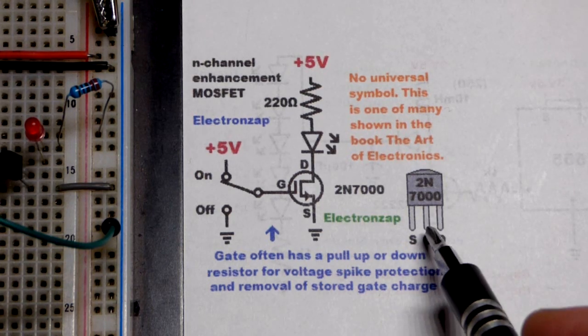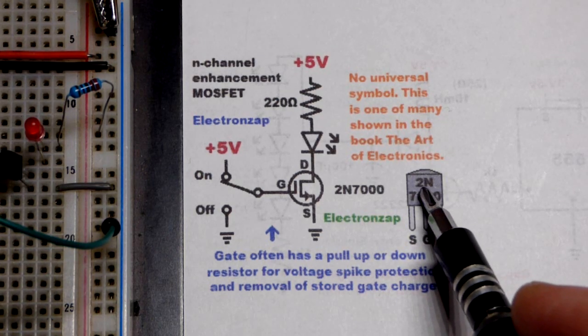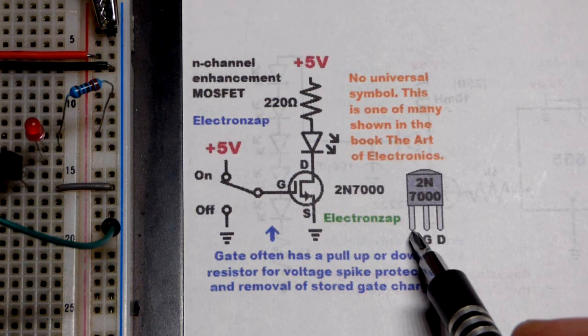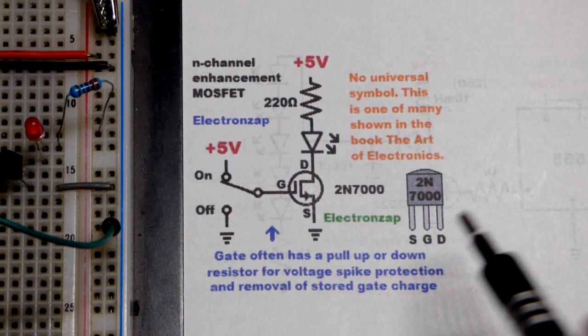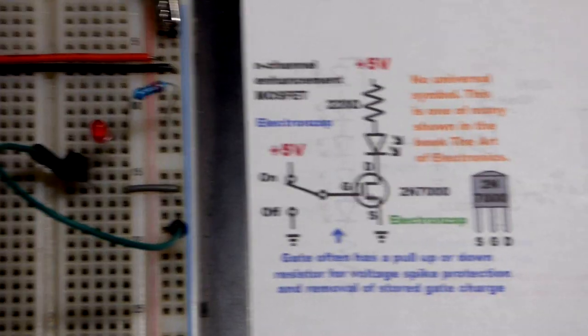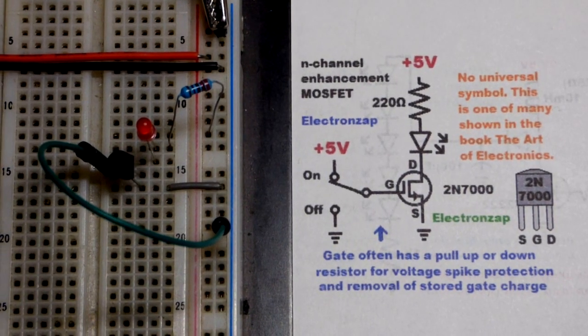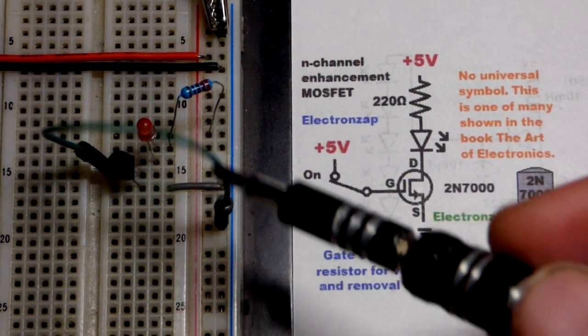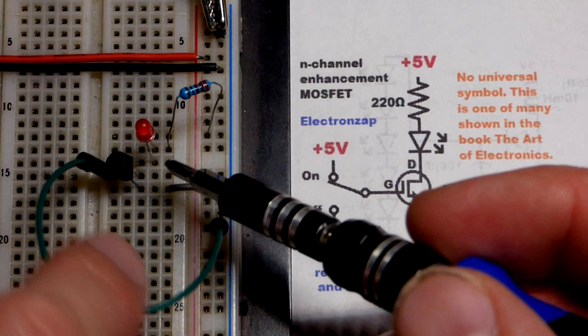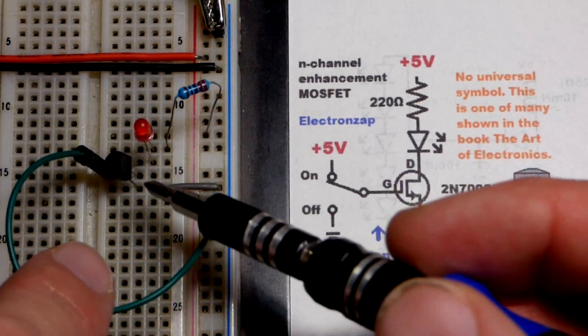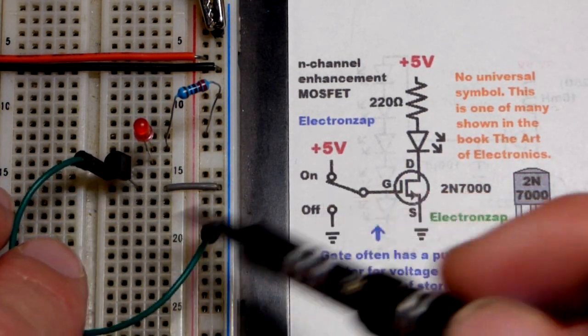So 2N7000: left pin is source, middle pin is gate, and the right pin is drain. I always check the datasheet though to verify. So drain is where the load connects, and then gate we got this jumper going to ground. That's simulating a switch that goes to a positive supply or negative.